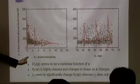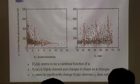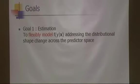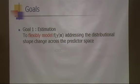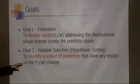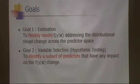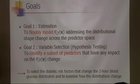Insulin sensitivity significantly changes the distributional shape, whereas the second predictor's impact may not be significant. I set two goals for this research: first, to flexibly model the conditional density addressing distributional change across the predictor space — an estimation problem; and second, to identify the subset of predictors that have a significant impact on the conditional distribution change — a hypothesis testing problem for variable selection.